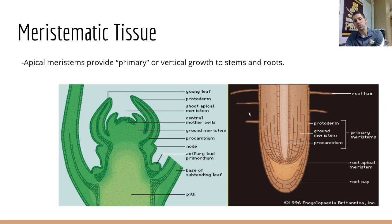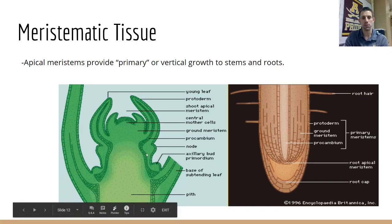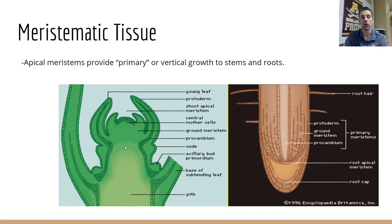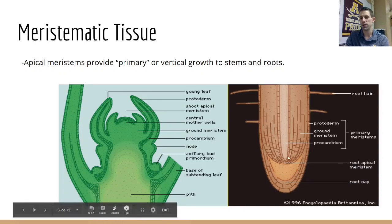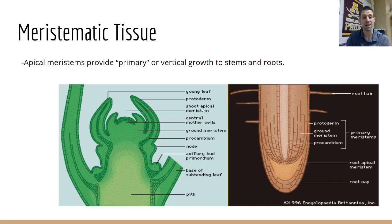Meristematic tissue is the only type of tissue in plants that is actively undergoing cell division all the time. There are two types. The first is apical meristems, which provide primary growth or vertical growth — you'll find these at the tips of stems and at the tips of roots. Right here is what we would consider the apical meristem, where all the cell division is happening to make the stem longer. All growth for plants to make them taller comes from the tips, not from the base. At the end of roots, there is a root cap, which is a protective structure that protects the root from friction as it grows out into the soil.